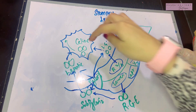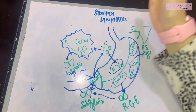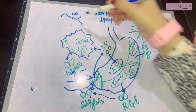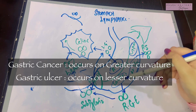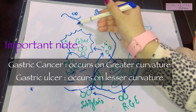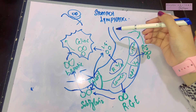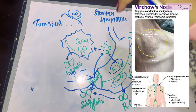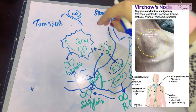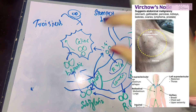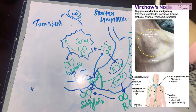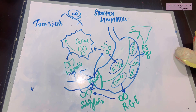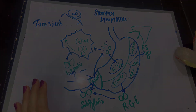The lymph from the stomach ends up in the thoracic duct, which lies close to the left supraclavicular nodes. Whenever there is any cancer in the stomach, the metastasis can end up in these supraclavicular lymph nodes — this is known as Troisier's sign. Whenever you palpate someone's left supraclavicular lymph nodes and they're enlarged, it is a very alarming sign and investigations need to be done on the stomach. That was all about the lymphatic drainage of the stomach.